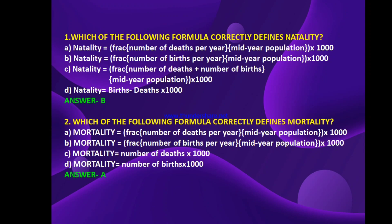Next question: which of the following formula correctly defines mortality? Option A: mortality equals fraction of number of deaths per year into mid-year population into thousand. Option B: natality equals fraction by mid-year population into thousand. Option D: mortality equals number of births into thousand. The answer is A — mortality equals fraction of number of deaths per year into mid-year population into 1000.